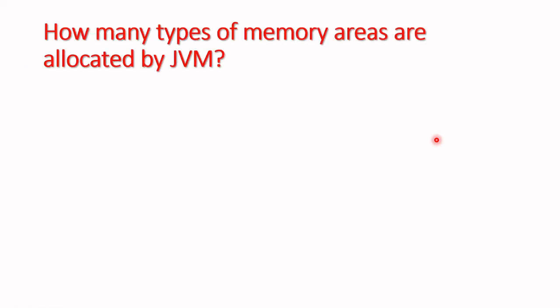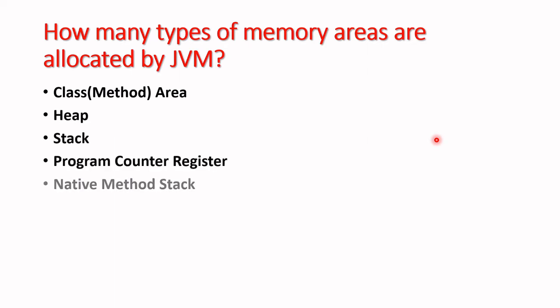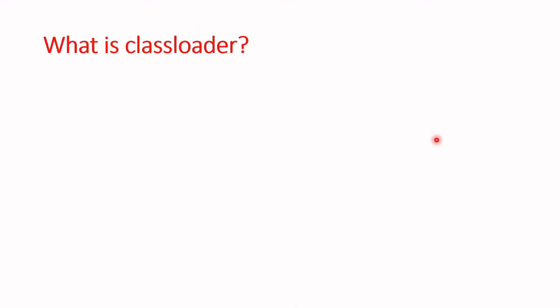Welcome back. In the last lecture we learned about how many types of memory areas are allocated by the JVM to run applications and programs. We covered class area, method area, heap, stack, program counter, and native method stack.